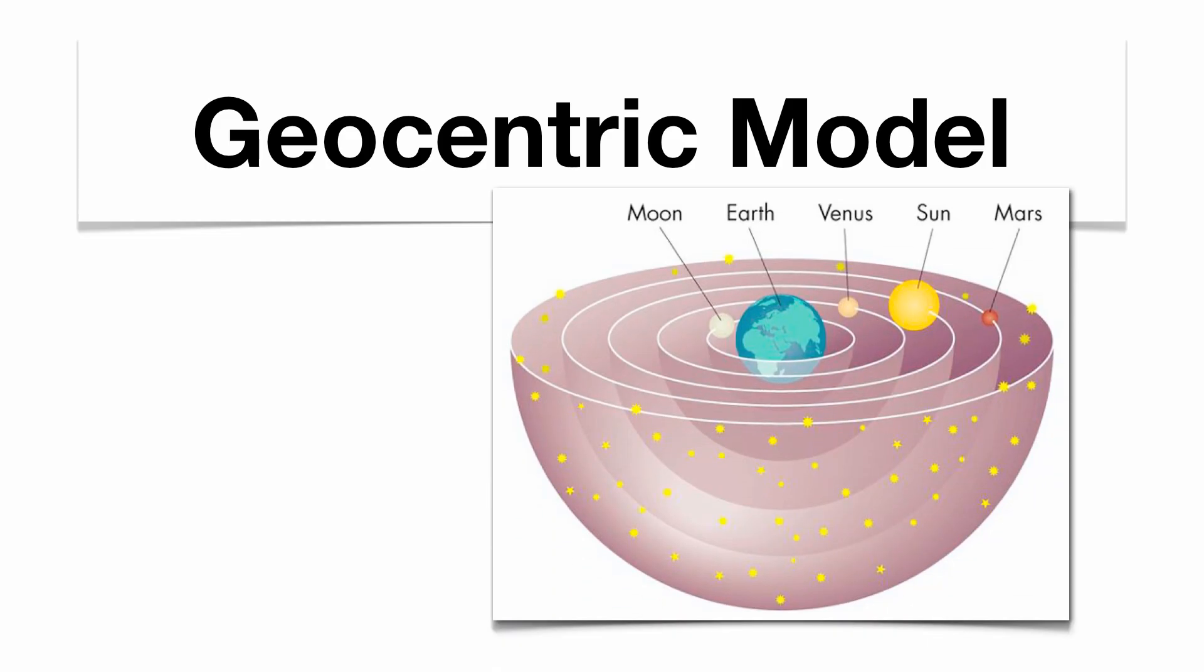Now there are two models that we're going to talk about of our solar system. The model that we know of today is very different from what it was in the past. The first model we're going to talk about is the geocentric model. The geocentric model is named after the fact that Earth was put in the center of our solar system.